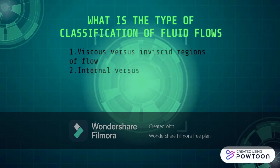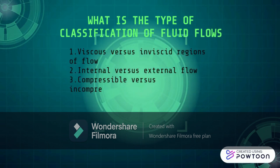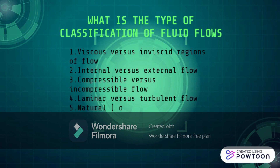The seven types are: viscous versus inviscid regions of flow; internal versus external flow; compressible versus incompressible flow; laminar versus turbulent flow; natural or unforced versus forced flow; steady versus unsteady flow; and one, two, and three-dimensional flows.